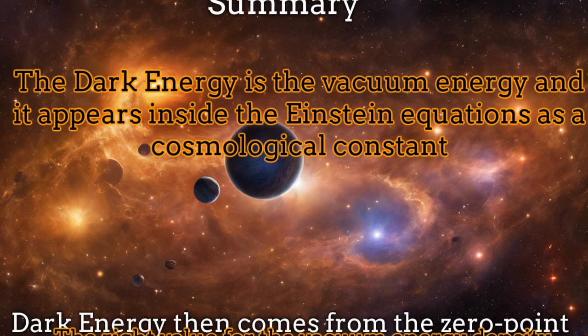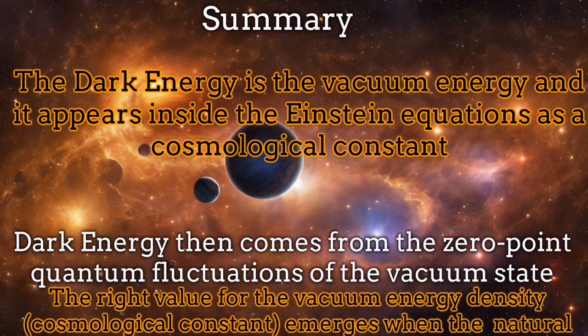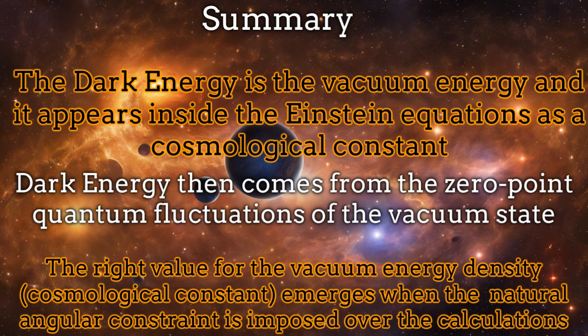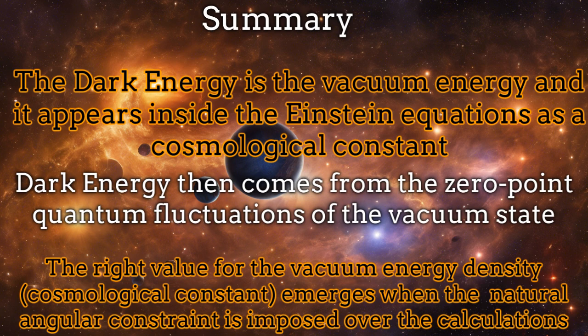In summary, dark energy is just the vacuum energy coming from the zero-point quantum fluctuations from the quantization process in quantum field theory for the quantum fields. It appears inside the Einstein equation as a positive cosmological constant. Finally, the solution of the dark energy problem emerges after considering a natural constraint which emerges from the angular component of the metric of the de Sitter space and after considering natural quantum arguments over the vacuum.